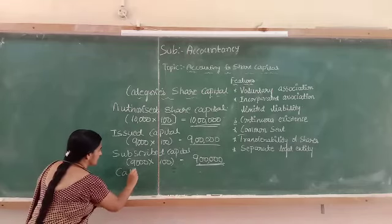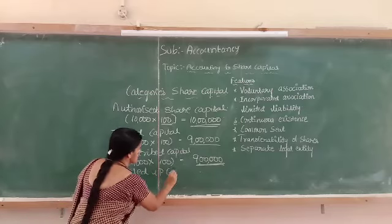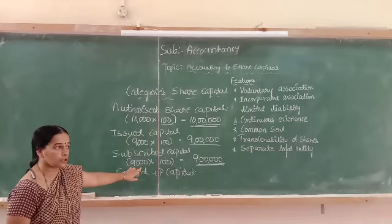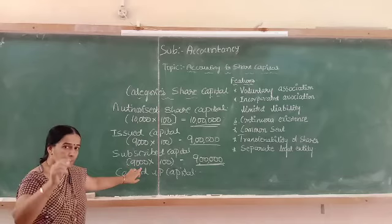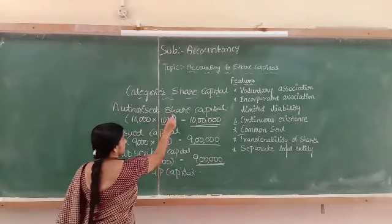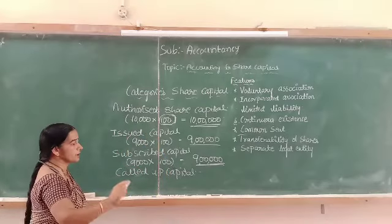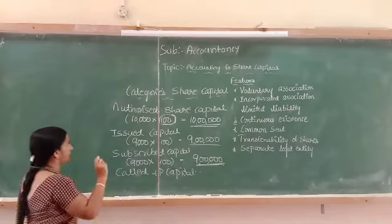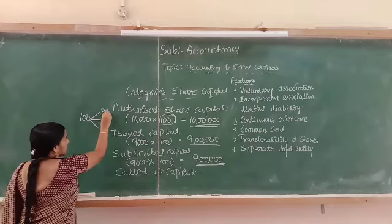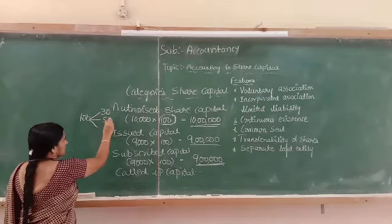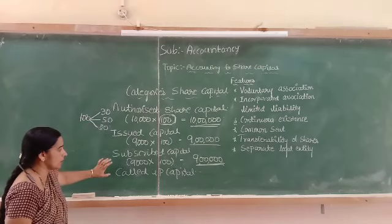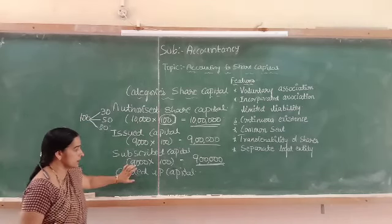The subscribed capital — it is not compulsory that the company calls up the full amount. Sometimes the company may call up the full amount or only part of the subscribed capital. Whatever amount is called up is called called-up capital. The entire amount need not be called in one installment — it can be split into application money, allotment money, first call, and final call. For example, per share Rs. 100 can be called as: application Rs. 30, allotment Rs. 50, and first and final call Rs. 20.